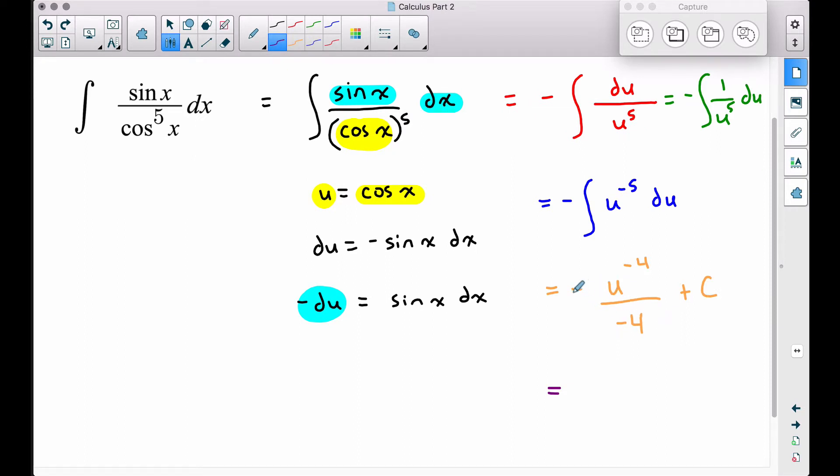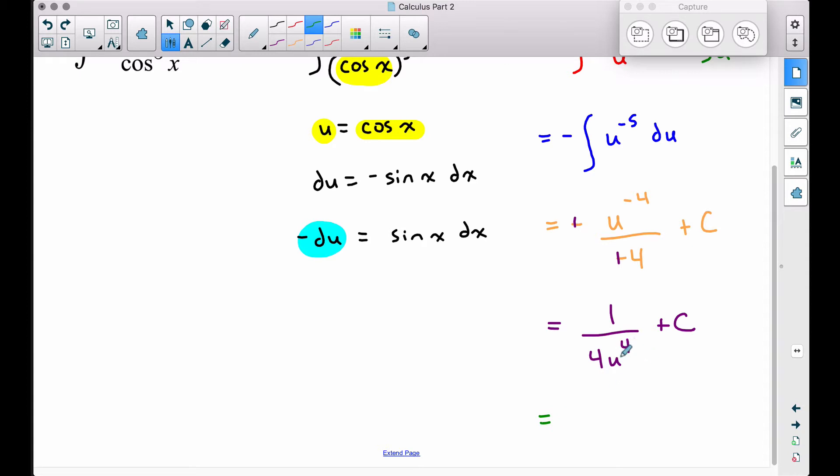From here, I'm going to simplify. The negatives cancel each other out. We can shoot this back down to the bottom if we would like. So if we shoot that to the bottom, we're going to have a 1 up top. The 4 becomes positive because these two negatives here cancel each other out. So we have 4U to the fourth plus some constant C. And then our final answer here is just going back and substituting whatever U was equal to. U was equal to the cosine of X. So therefore, we have 1 over 4 cosine of X, and the cosine of X is raised to the fourth power plus some constant C.